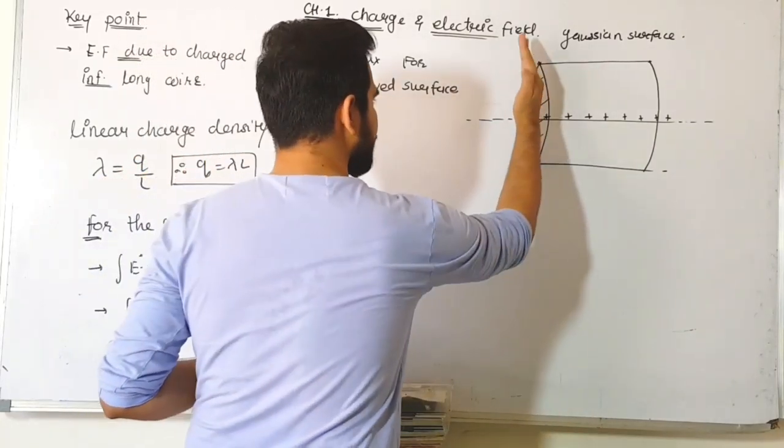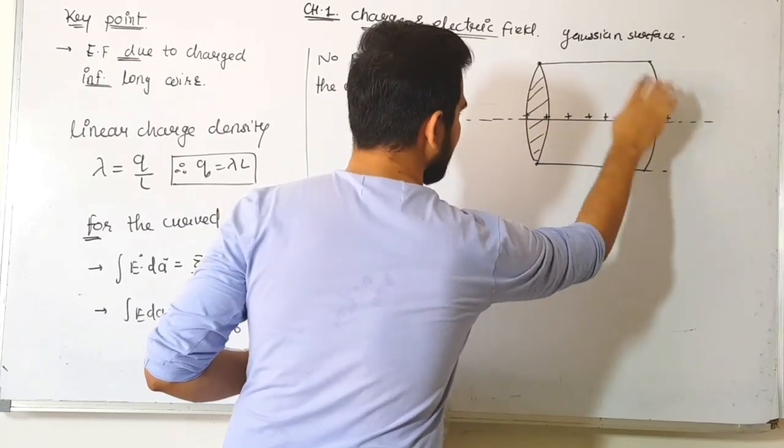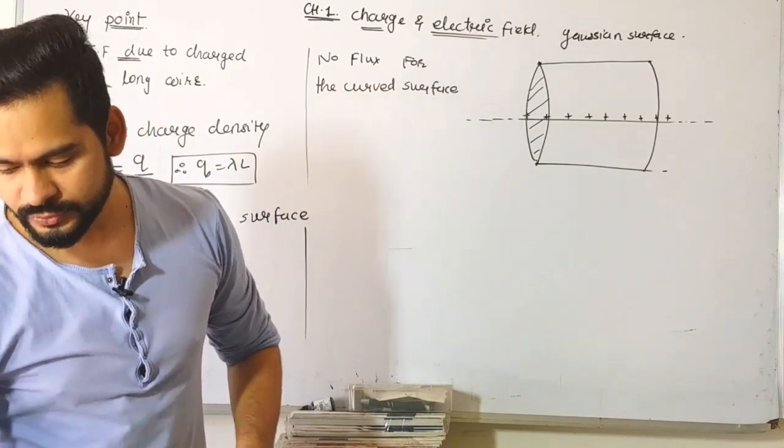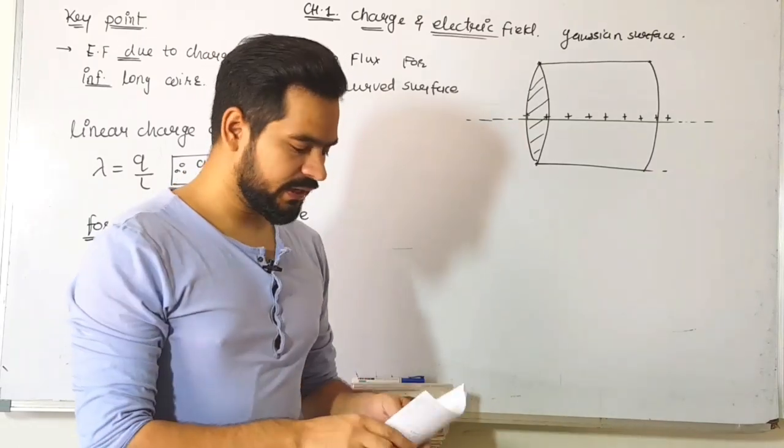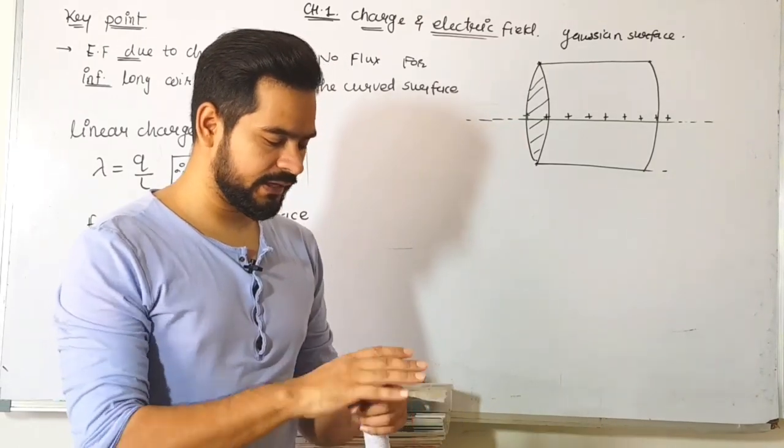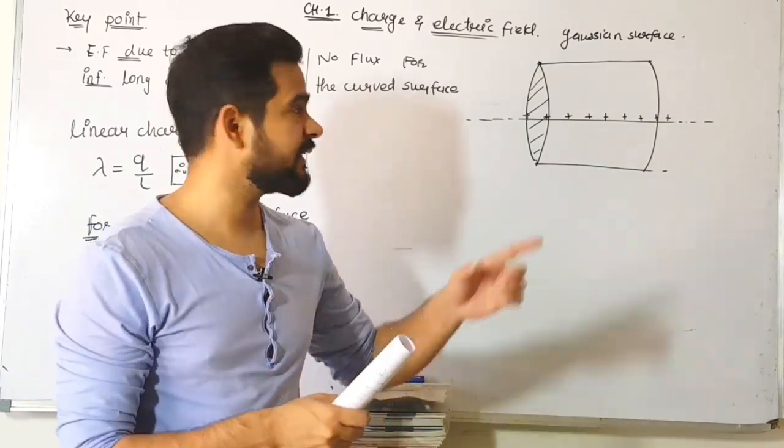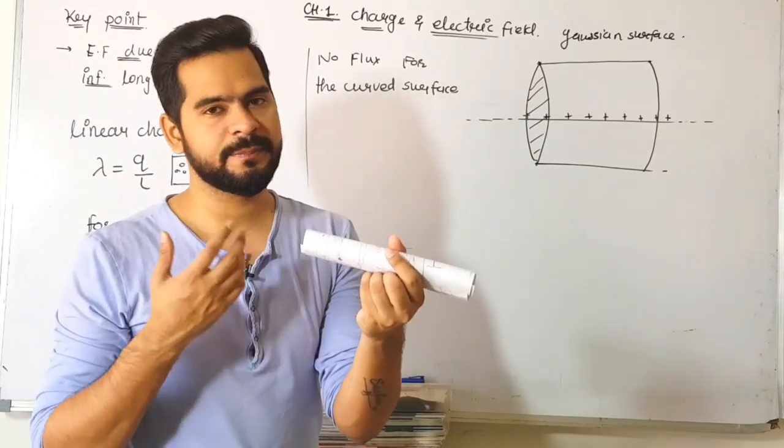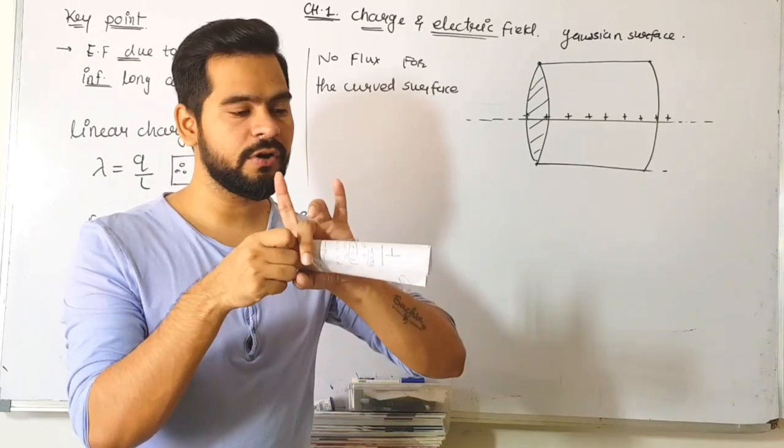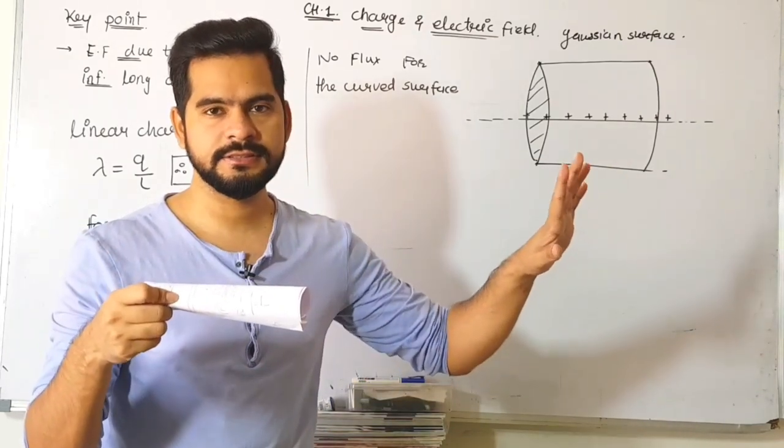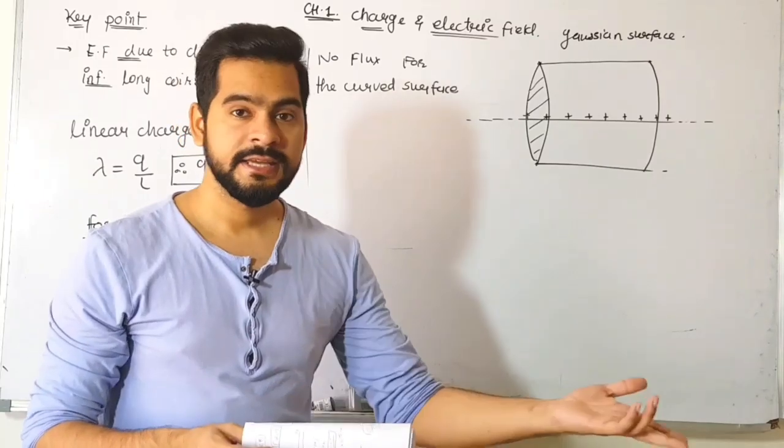How many surfaces does this Gaussian cylinder have? It has three surfaces: cross section one on the left, cross section two on the right, and the curved surface. This cylinder has two flat circular ends and one curved cylindrical surface.